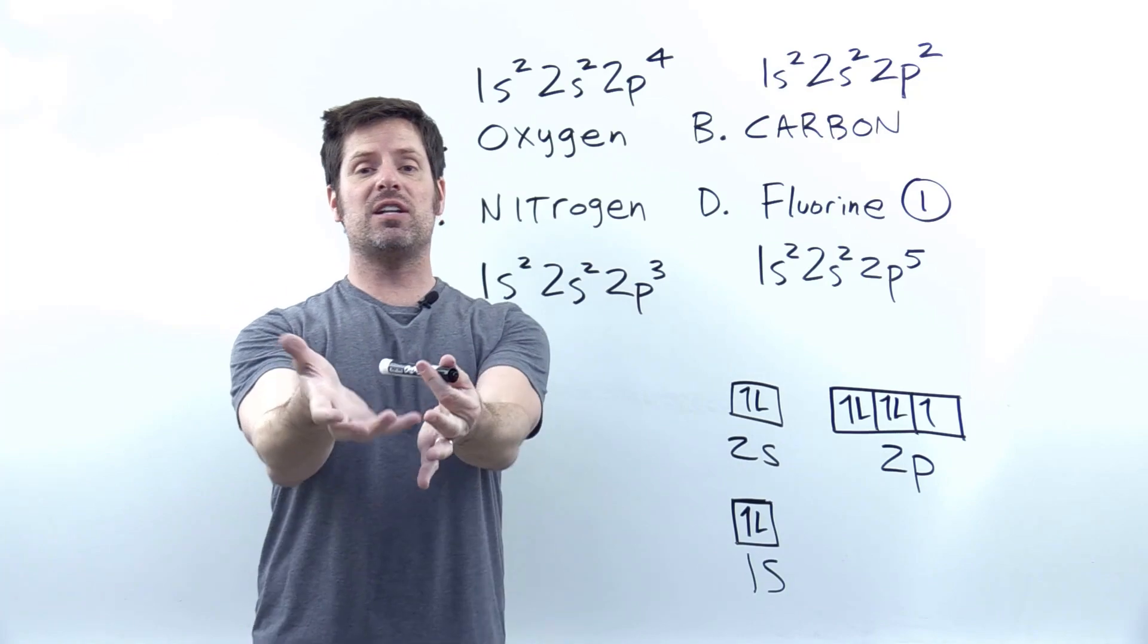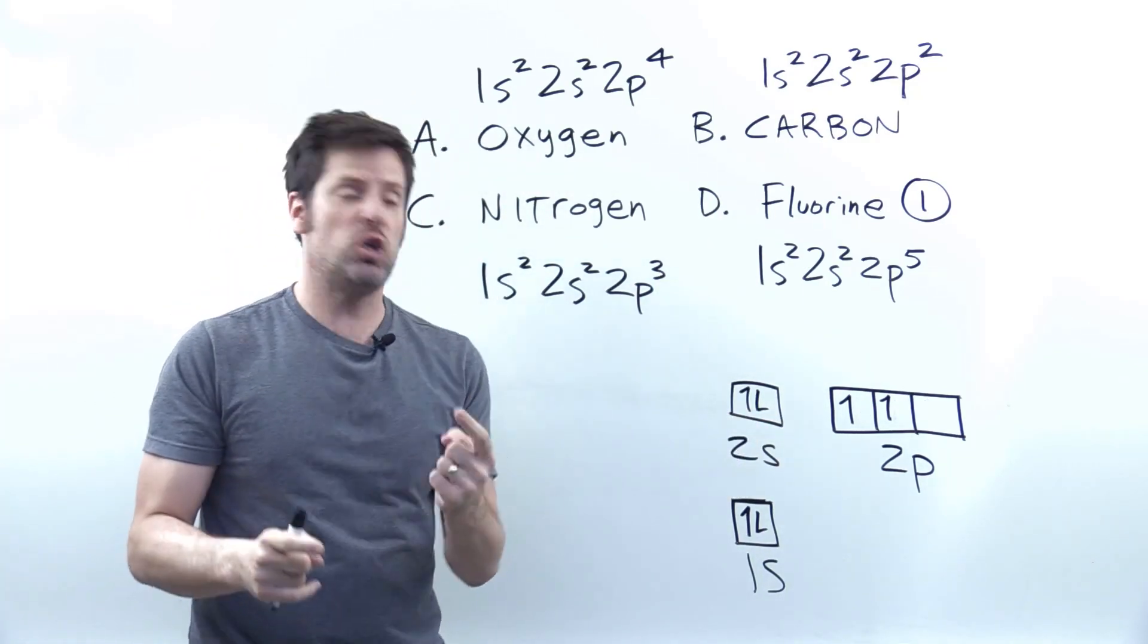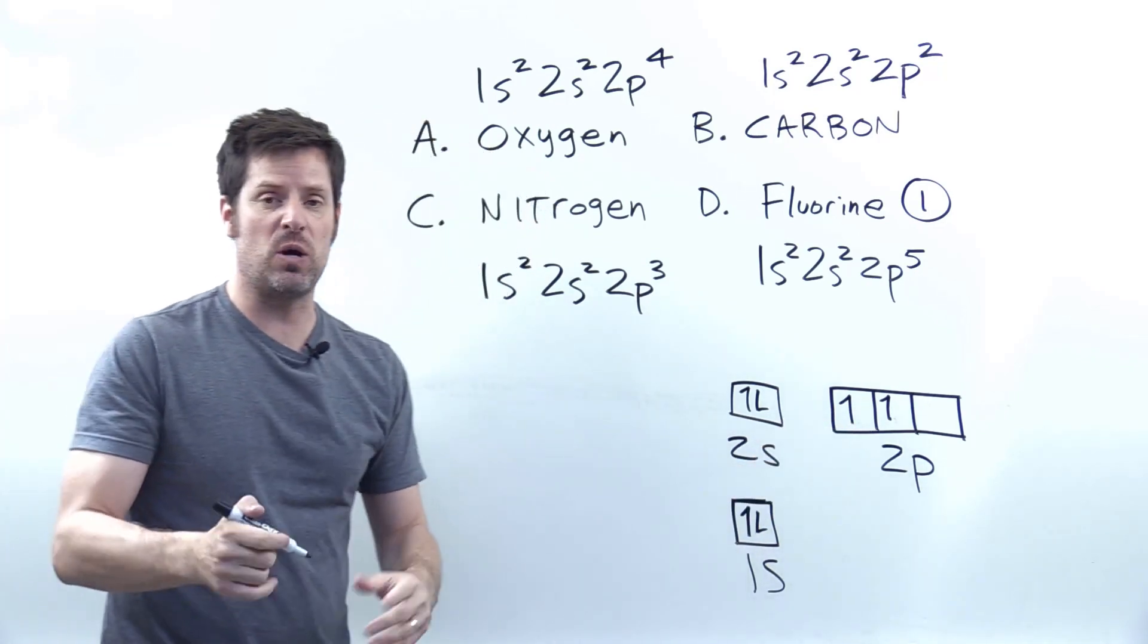Now, if we go through the analogous process for carbon, its diagram should look like this. And you can see that it has two unpaired electrons represented by those arrows right there.